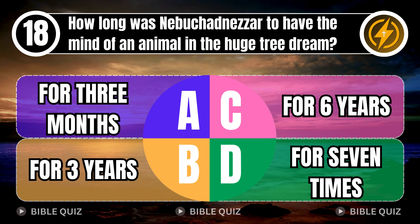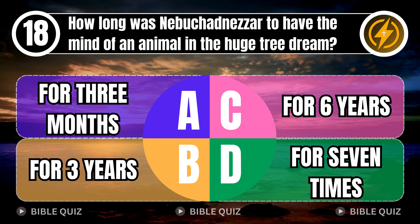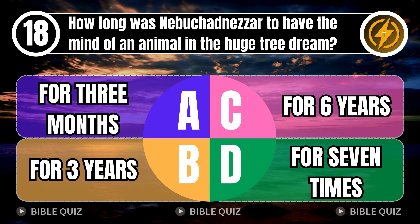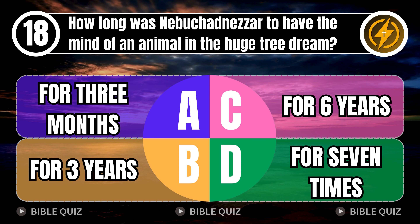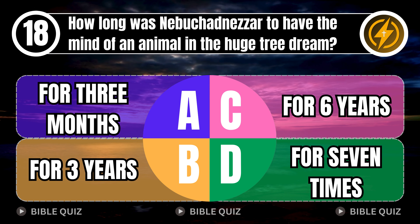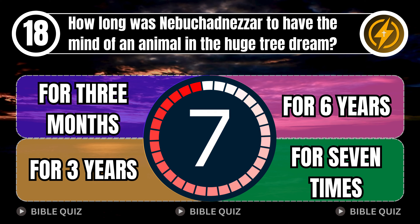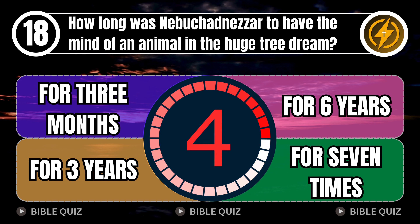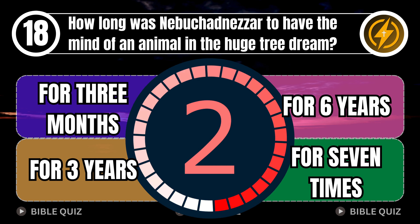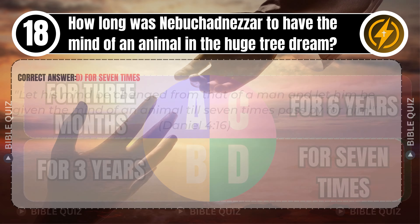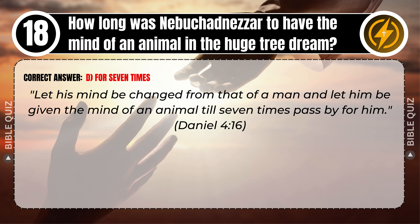Question 18: How long was Nebuchadnezzar to have the mind of an animal in the huge tree dream? A. For three months. B. For three years. C. For six years. D. For seven times. Correct answer: D. For seven times. Let his mind be changed from that of a man and let him be given the mind of an animal, till seven times pass by for him. Daniel 4 verse 16.